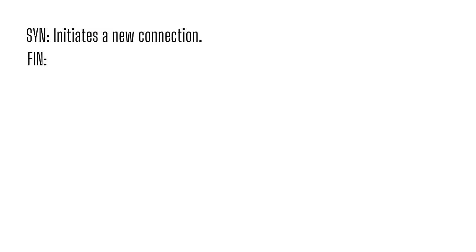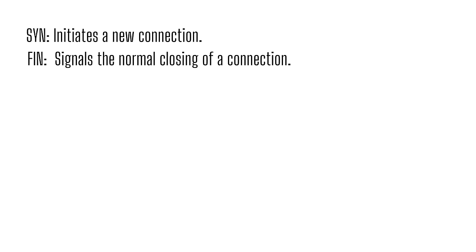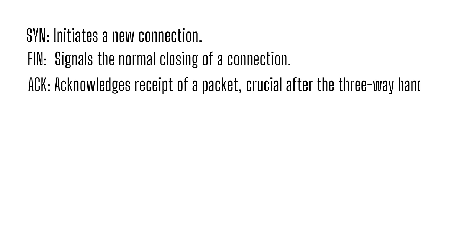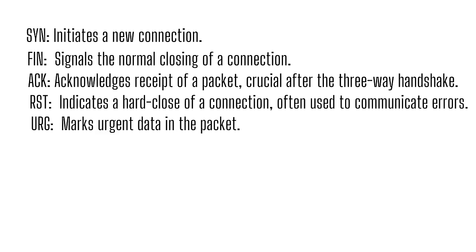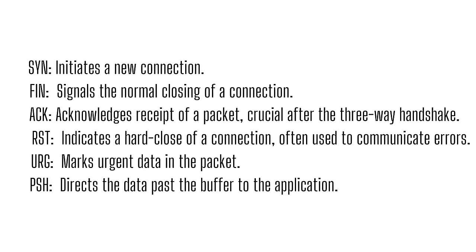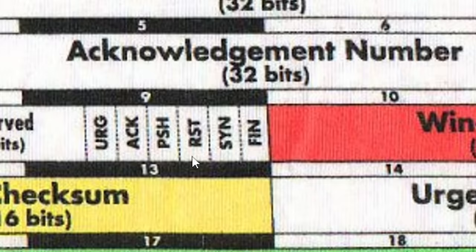The flags in row 4 include: SYN, which initiates a new connection; FIN, which signals the normal closing of a connection; ACK, which acknowledges receipt of a packet (crucial after the three-way handshake); RST, which indicates a hard close of a connection, often used to communicate errors; URG, which marks urgent data; and PSH, which directs data past the buffer to the application. Understanding these flags is essential for those using recon tools like nmap or hping3, as they're used to create packets for specific purposes, such as evading detection or eliciting responses from secure systems.